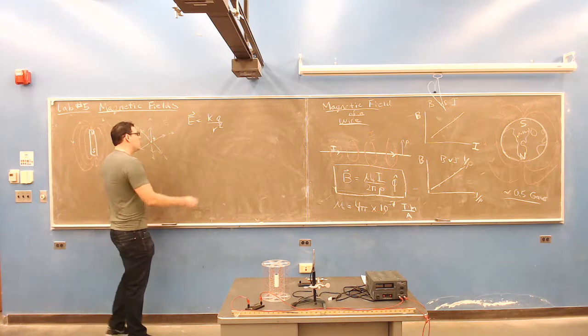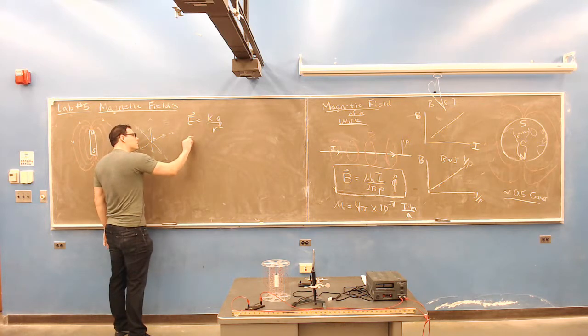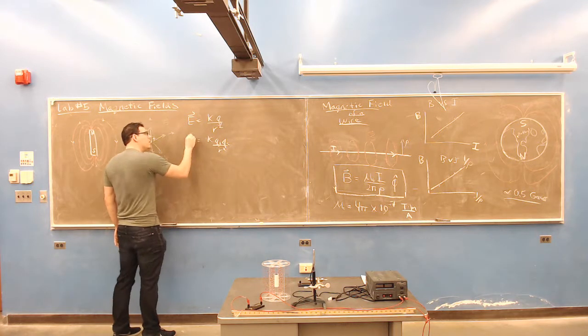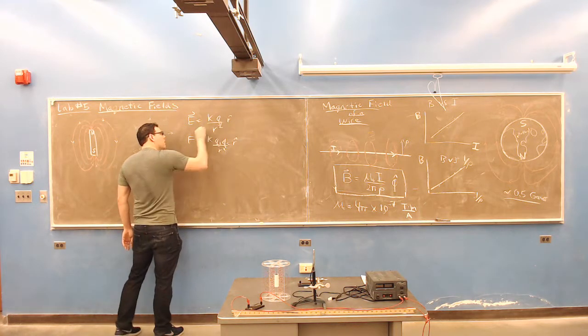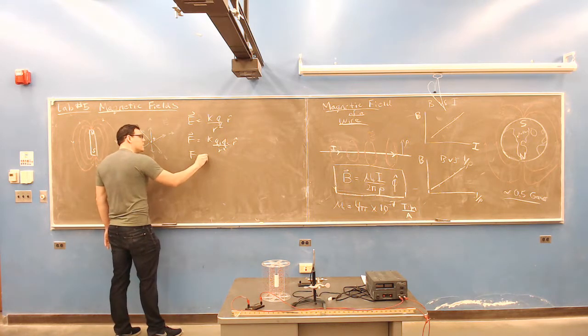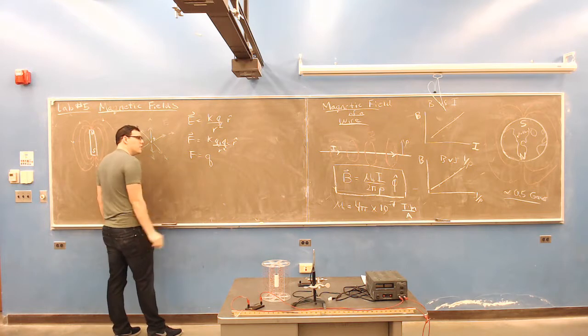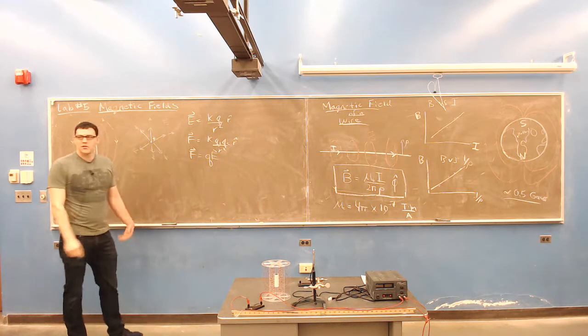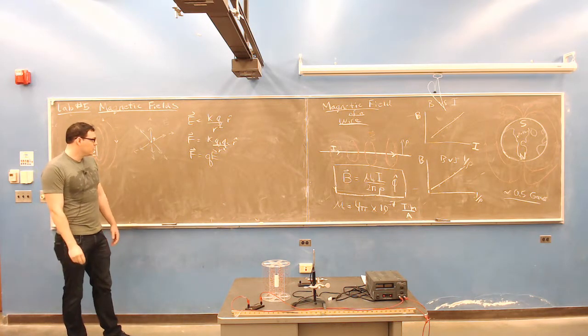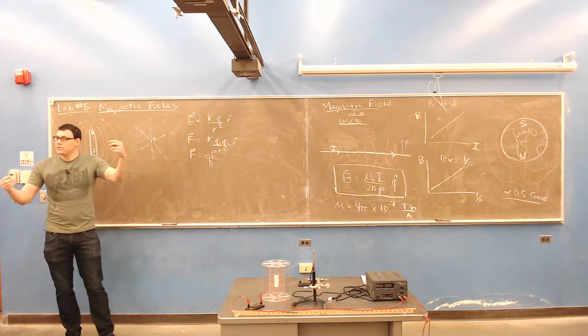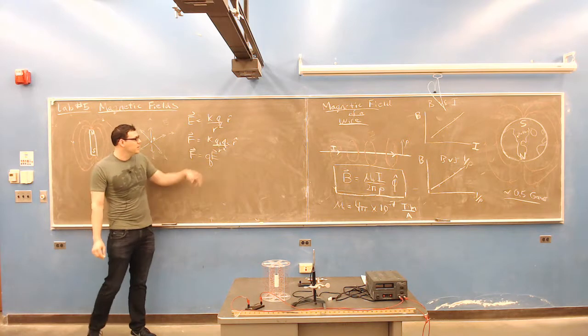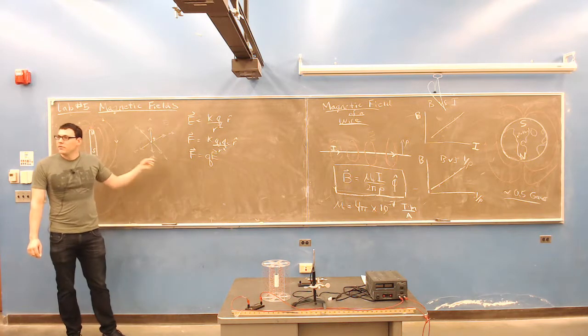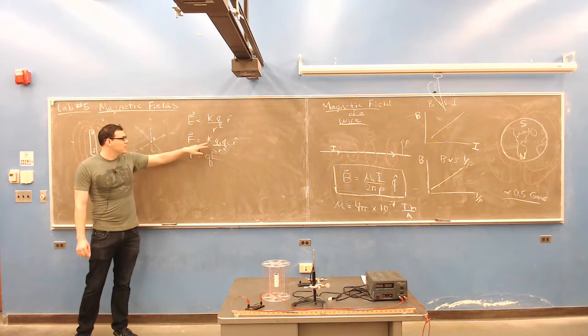There's also another law connecting this to the force law, the Coulomb's force law. Because the Coulomb's force law is KQ1Q2 over R squared, and it's a vector. And so F is equal to QE. So a force is an interaction, so it requires two charges. The electric field exists everywhere in space. So it's created by a charge, but it exists everywhere. So this is a field and force is an interaction.